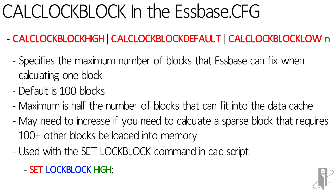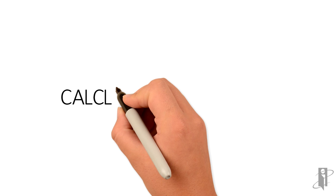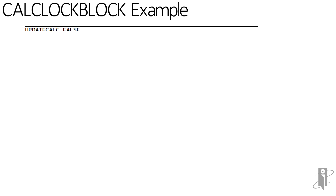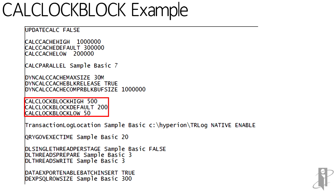I have no idea why they won't just let you say SET LOCKBLOCK and then a number of blocks — but you can't. You have to say HIGH, DEFAULT, or LOW. If you'll notice, about halfway down, there are three Calc Lock Block settings. You can't set them to a specific application or database, so it's kind of nice that they give you three of them. My high is set to lock up to 500 blocks, default is set to lock up to 200 blocks, and low is set to lock up to 50 blocks.